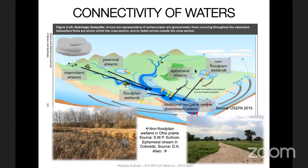The black arrows in the figure represent potential connectivity with downstream waters, in this instance with a larger river. Under the current rule, all streams are protected, as are floodplain wetlands, with non-floodplain wetlands to be evaluated on a case-by-case basis. Connectivity is the notion that waters are connected to one another in various ways, and that because of these connections, streams, wetlands, and other water bodies such as ditches and ponds can influence downstream waters.